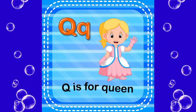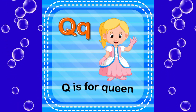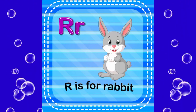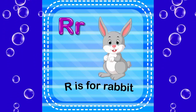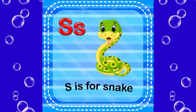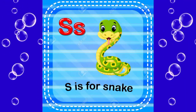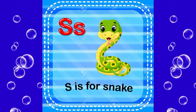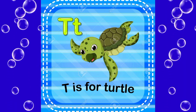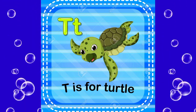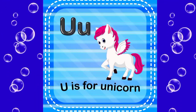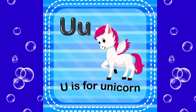O is for ostrich, P is for picker, Q is for queen, R is for rabbit, S is for snake, T is for tortoise, U is for unicorn.